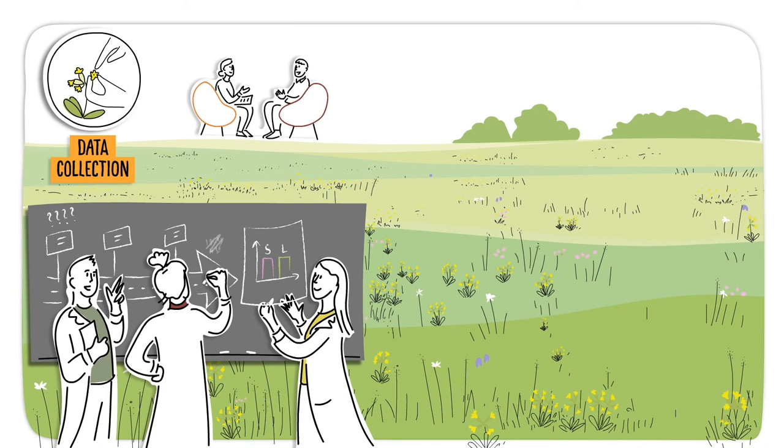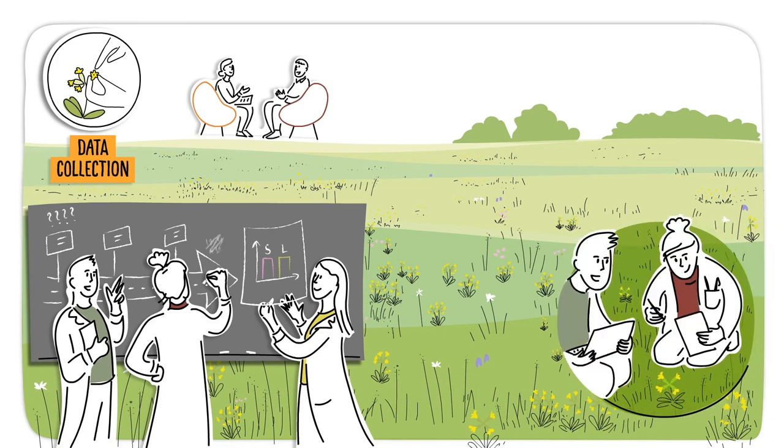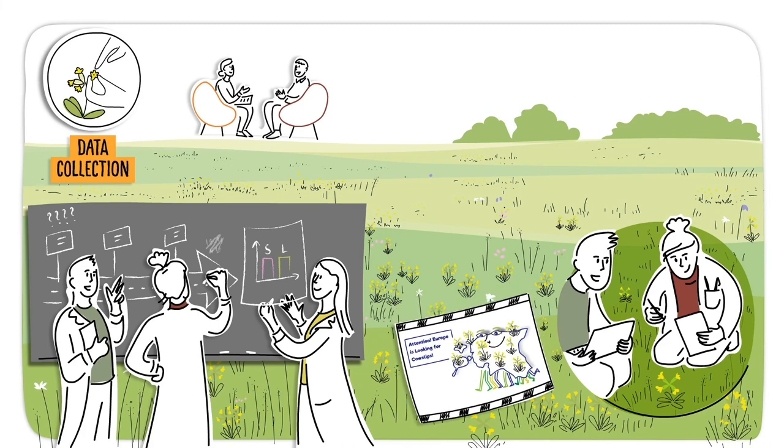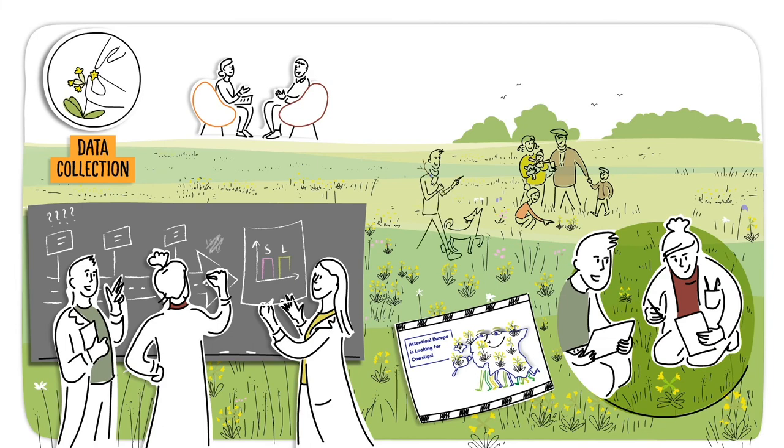For example, social scientists may conduct interviews with people, and natural scientists might collect samples from nature. Researchers sometimes also ask for help with gathering data. When this help comes from members of the public, it can be called citizen science. The cowslip campaign was one such occasion where scientists invited people to help with collecting data.